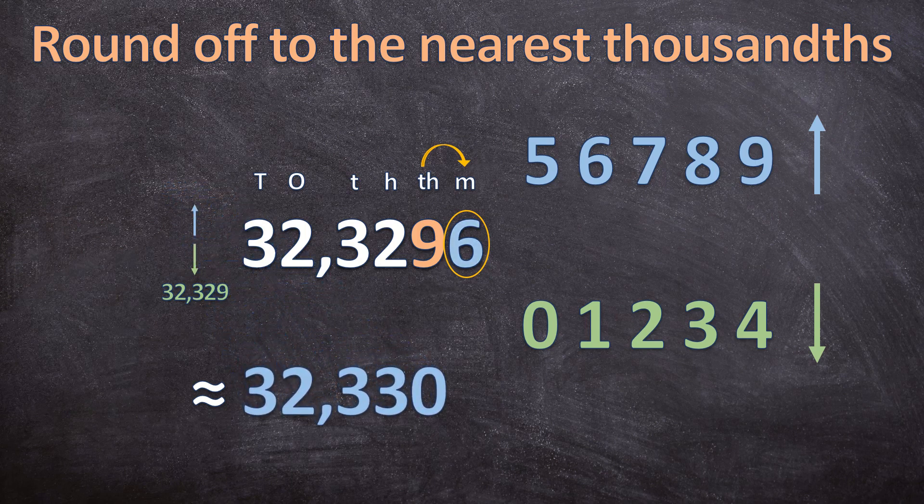Just a quick observation: I include the zero in the thousandths place value because the question asks to round to the nearest thousandths, so I write my decimal number up to the thousandths place. Even though 32,33 is exactly the same as 32,330, I include that zero to clearly indicate the thousandths place value as required by the question.